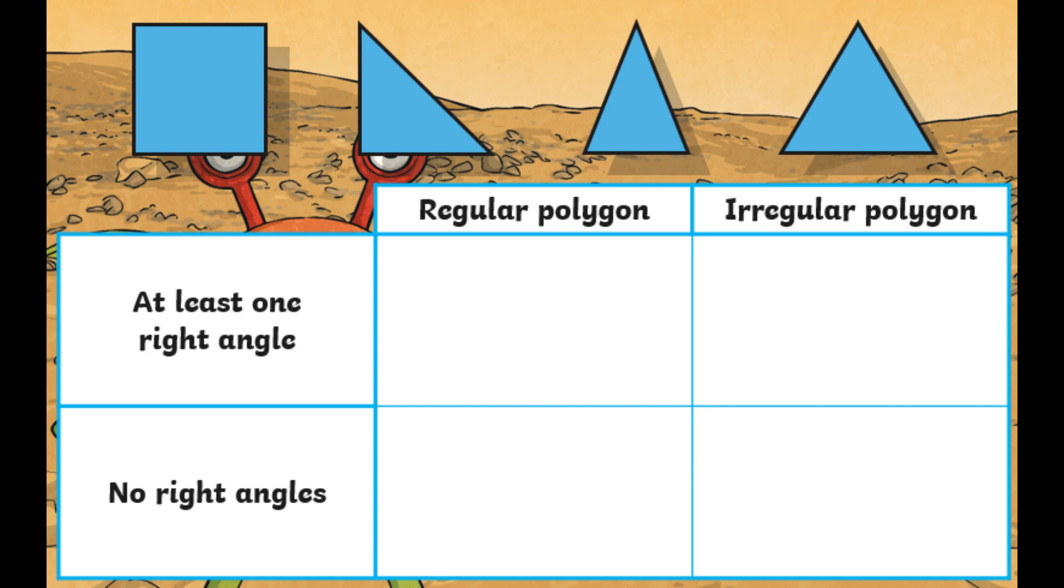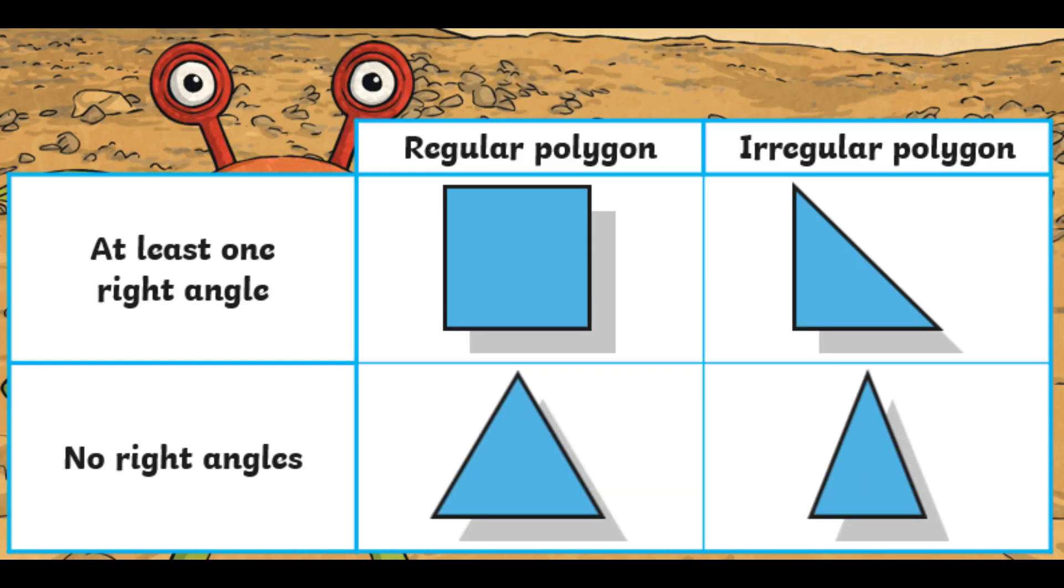Pause the video. Go back to the step to success if you need to. You could draw this on a scrap piece of paper and work out where you think those shapes are going to go. Hopefully now you've had a go and you can see this is where the shapes are.